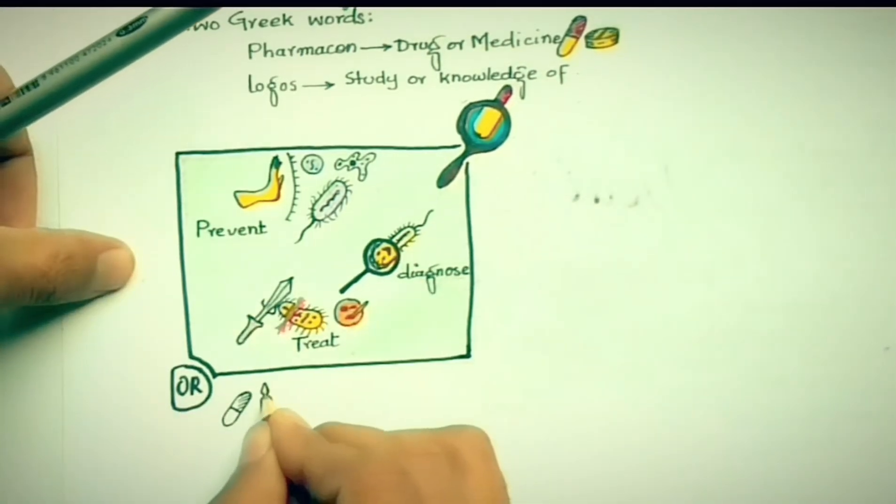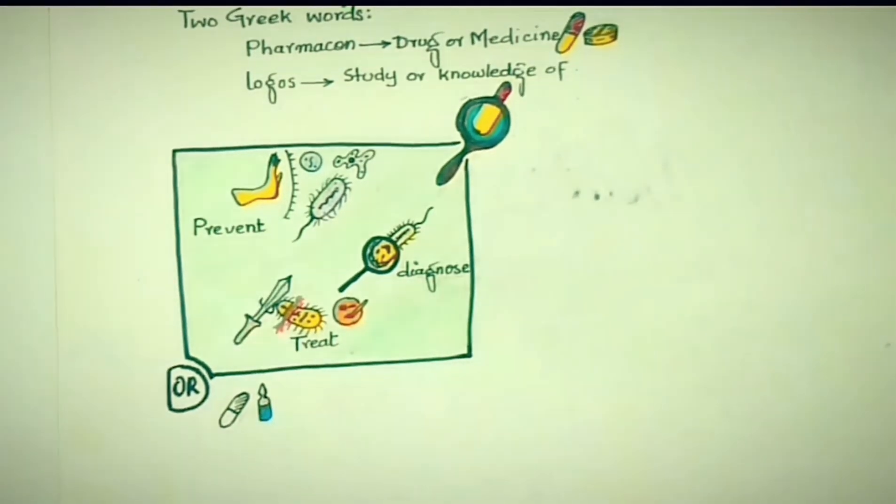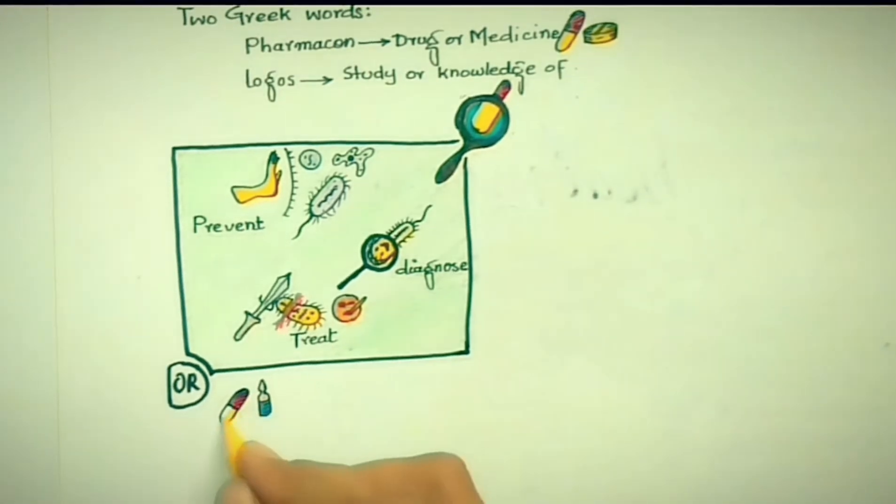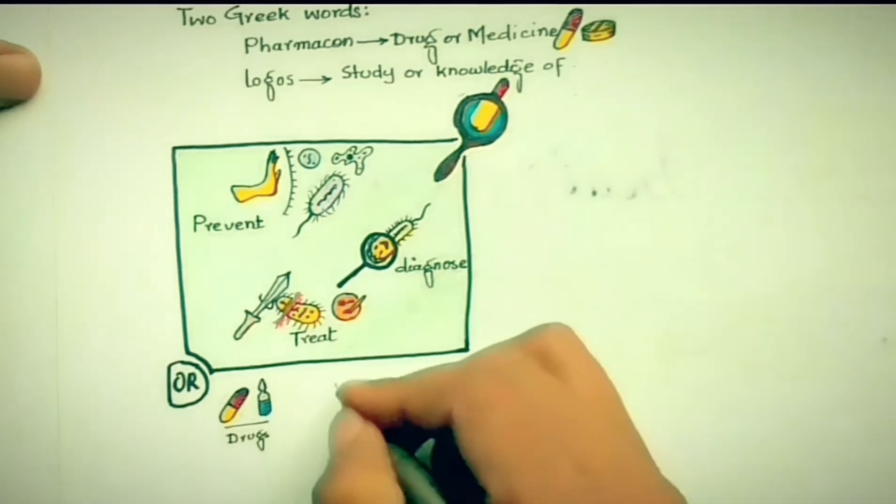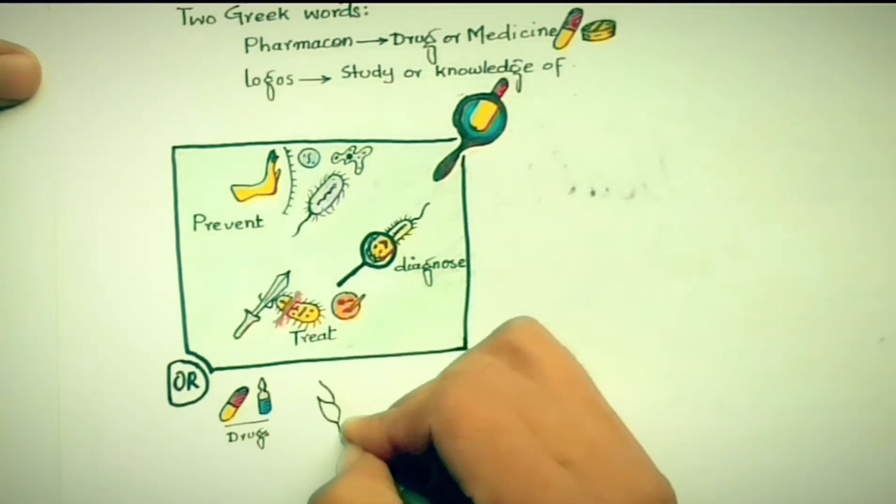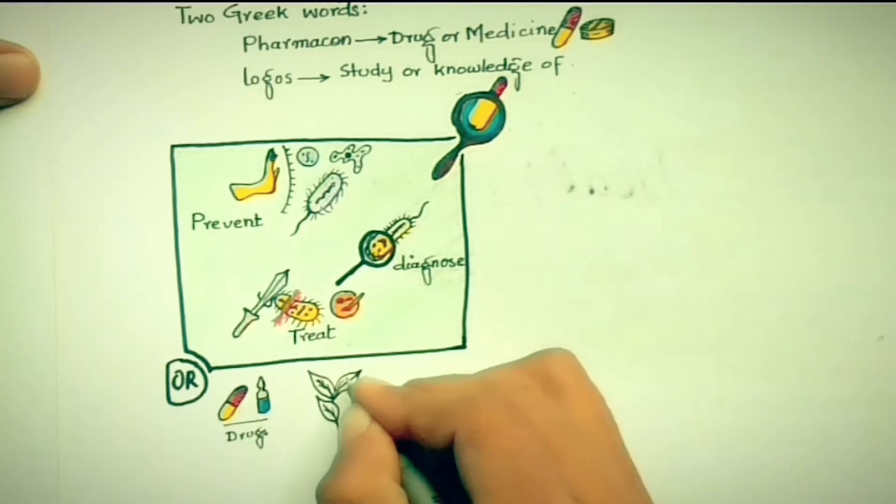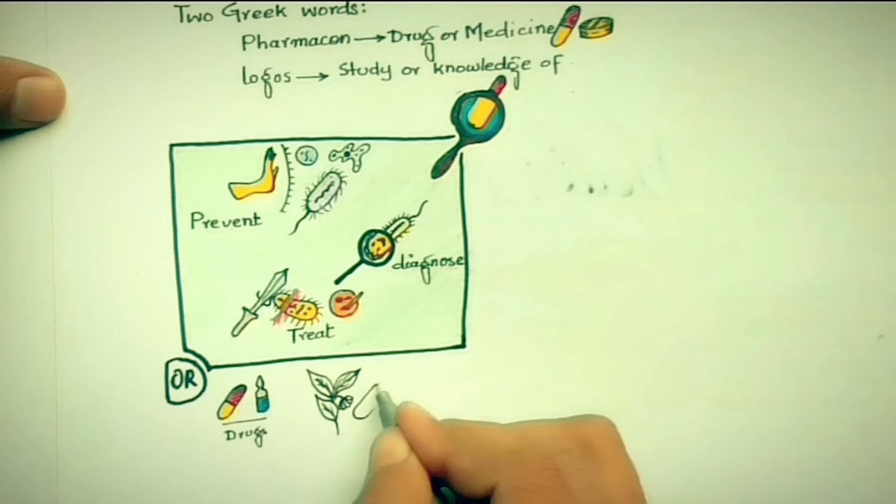Origin of drugs means from which source the drug is obtained—from plants, bacteria, or other sources. For example, we obtain digoxin from plants and insulin from bacteria. Insulin is used for diabetes mellitus type 1, and digoxin is used for cardiac failure.